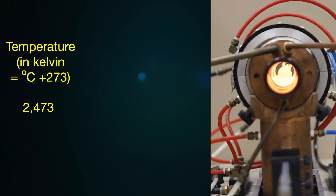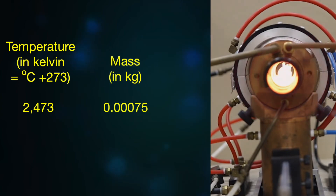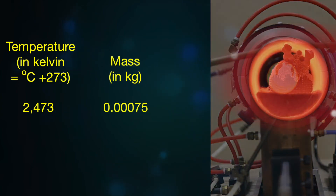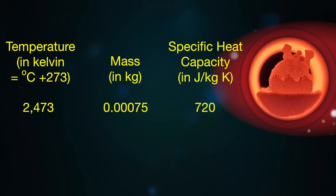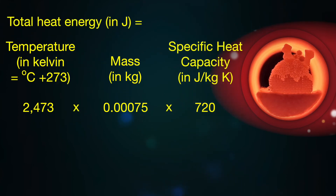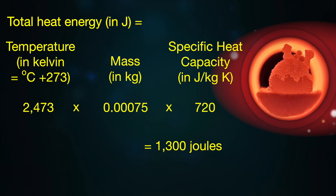So here's the calculation for the hot pudding. Mass: 0.75 grams. Specific heat capacity of graphite: 720 joules per kilogram degree Celsius. Multiply these all together and we find Wesley's pudding has about 1,300 joules of heat energy.